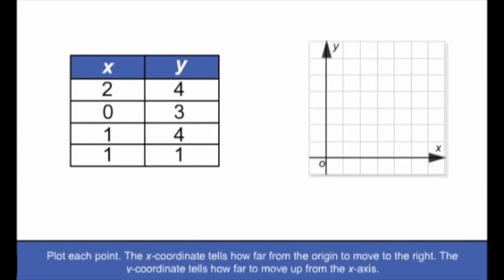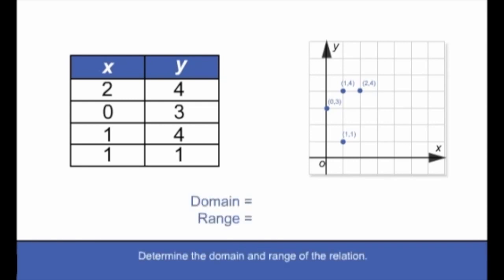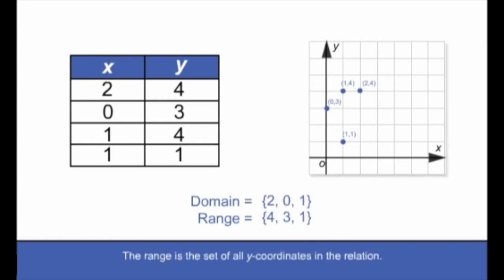The x-coordinate tells how far from the origin to move to the right; the y-coordinate tells how far to move up from the x-axis. Plot the points (2,4), (0,3), (1,4), and (1,1). Then determine the domain and range: the domain is the set of all x-coordinates in the relation, and the range is the set of all y-coordinates in the relation.